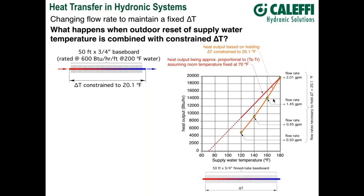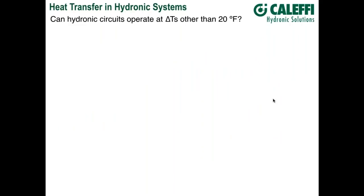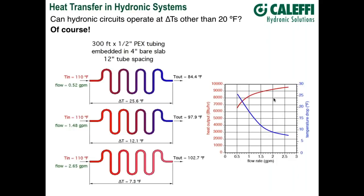Now here's another question. I often quip that if I created a museum for North American hydronics, I'd have a big plaque with the number 20 on it — because a lot of people seem to think that a 20-degree delta T is the right or only delta T a hydronic circuit can operate at. Actually, that's not true. You can have a wide variety of delta Ts. Let me show you what's possible.